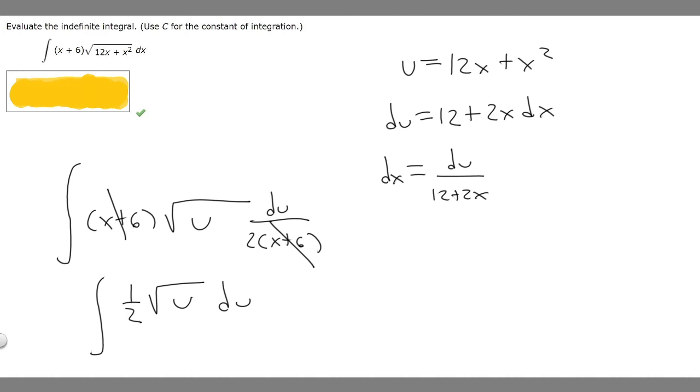Now we want to find the indefinite integral or the anti-derivative. This is (1/2) times u to the 1/2, because the square root of u is the same thing as u to the 1/2.